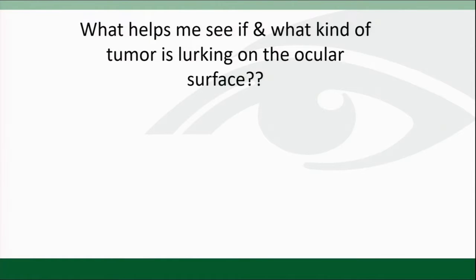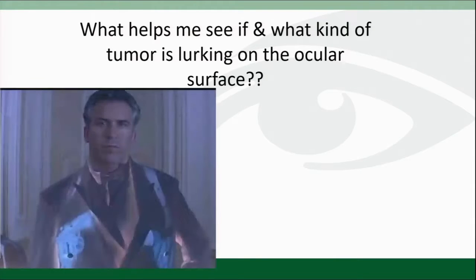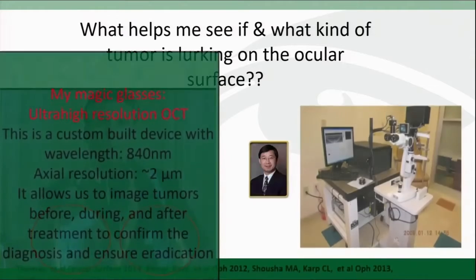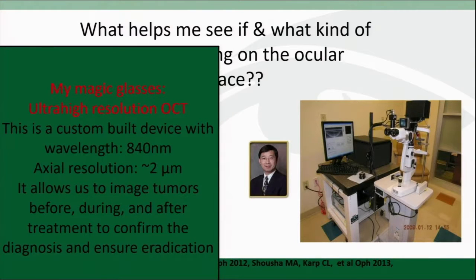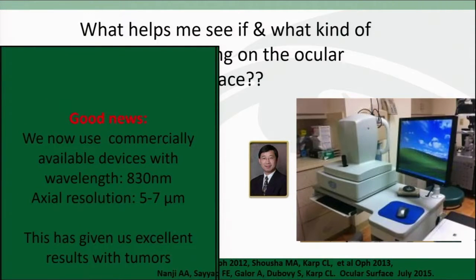Bond has some magic glasses to see what's going on and see if danger is lurking — what about me? Well, I do have something: my high-resolution OCT, which helps me see when danger is lurking on the ocular surface. This started off as a custom device that Jay Wang, my biomedical engineer, built for us, and now I use a commercial device which has 5 to 7 microns and gives me excellent resolution.